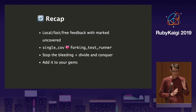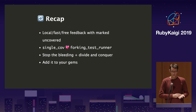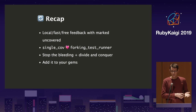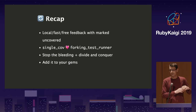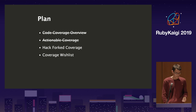Recap: we want fast, local, free feedback with marked uncovered lines so you can say 'this is uncovered, take care of this.' If you use SingleCov, try using the forking test runner which makes coverage atomic per file and avoids edge cases. Either stop the bleeding first and then fix everything, or do a divide-and-conquer where you say 'this is my area' or 'this is my new class, I'm going to make this nice.' Add it to your gems and small projects — it's easy to get started.